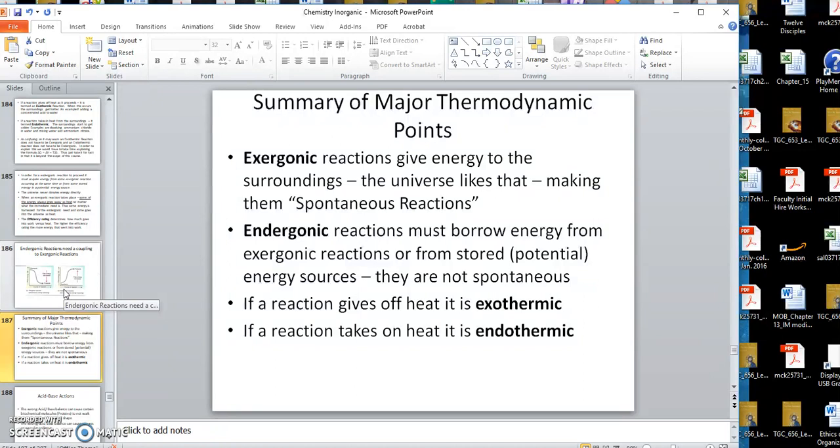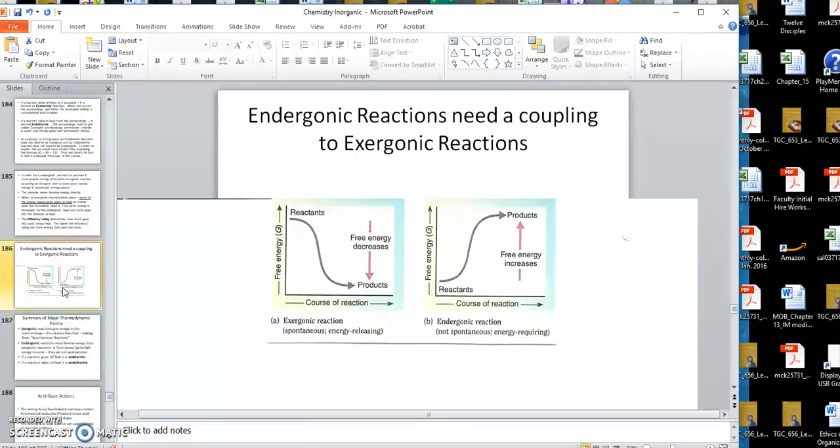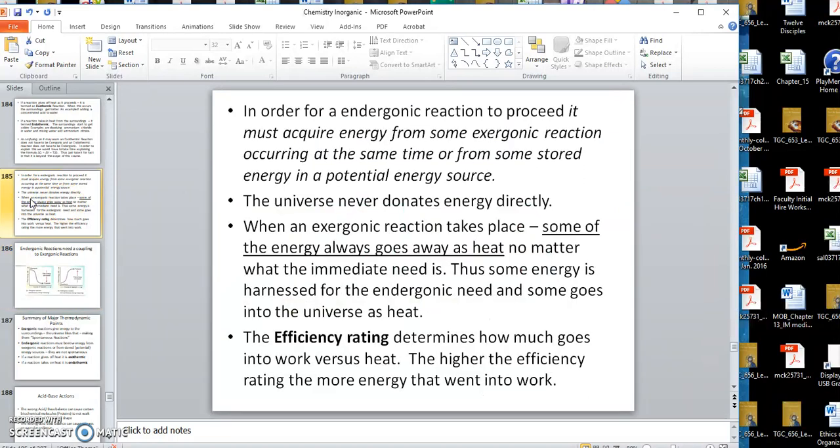The universe is very stingy on giving up energy. The only way an endergonic reaction can go is for an exergonic reaction to drive it. These reactions have to in some way be coupled. When you give off energy, you acquire that energy. In order for an endergonic to proceed, it must acquire energy from some exergonic occurring at the same time. The universe never donates energy. Even when an exergonic reaction is coupled to an endergonic, not all the energy is going to drive the endergonic. Some of the energy is going to go away as heat. You have to pay a debt to the universe.